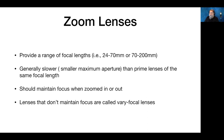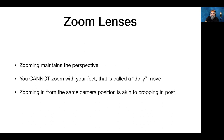A zoom lens provides a range of focal lengths — 24–70, 24–105, 70–200, 100–400. They're generally slower than prime lenses of the same focal length range. They should maintain their focus when zoomed in or out — if they don't, they should be called a varifocal lens. Zooming maintains perspective; it's the size relationship between elements in the scene. You can't zoom with your feet because that is a dolly move — zooming from the same position is akin to cropping in post.